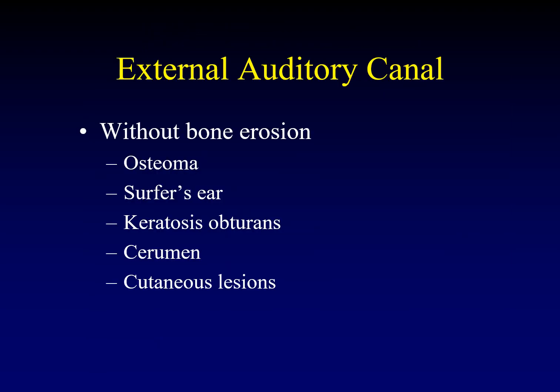But what if there isn't any bone erosion in the external auditory canal? Then we're looking at more benign lesions such as osteomas and the collection of osteomas we call surfer's ear. There's keratosis obterans. Most commonly we just get impacted cerumen, which has a distinctive radiologic appearance. There can also be cutaneous lesions, because this is skin forming the walls of the external auditory canal.